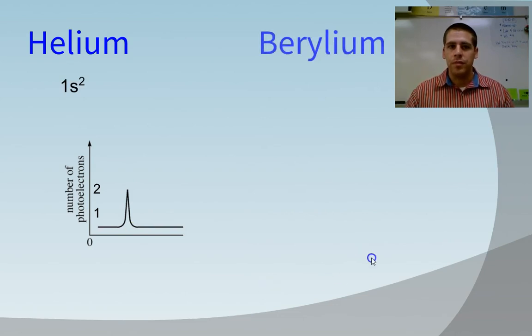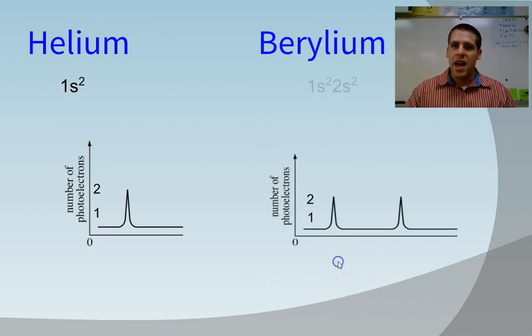Let's take a look at beryllium. Beryllium has a configuration of 1s2 and 2s2, and so we end up with two peaks of equal size because we eject the 2s electrons first and then the 1s electrons.